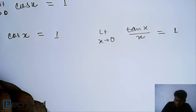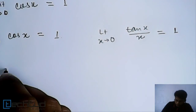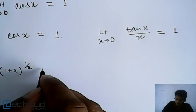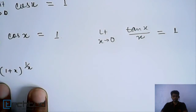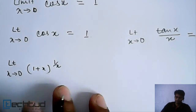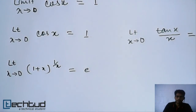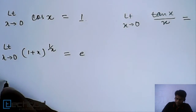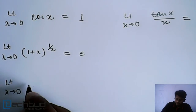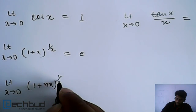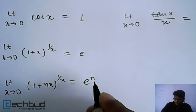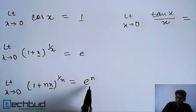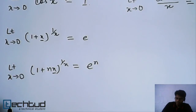The next result is: limit as x tends to zero of (1+x)^(1/x), which is equal to e. Another one is: limit as x tends to zero of (1+nx)^(1/x), which is equal to e^n. So if instead of x you have n times x, that n comes into the power of e.